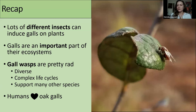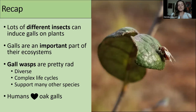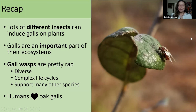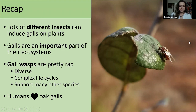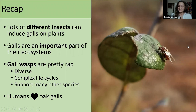So just as a little recap — hopefully I didn't go too quickly through all this, but we can revisit any topics. Lots of different insects can induce galls on plants, and the galls themselves are a very important part of their ecosystems. Even if they're hard for us to see on a daily basis, they actually provide a lot of services for their different habitats. Gall wasps are pretty rad for different reasons — the family is incredibly diverse, they have super cool complex life cycles, and they support a ton of other species, whether parasitoid predators or other critters that munch on them. And finally, humans and oak galls were a match made in history — we've been using them for thousands of years, and you can still use them today, though it's more for fun than actual business.